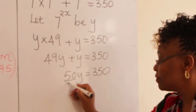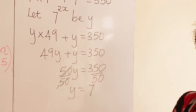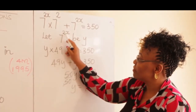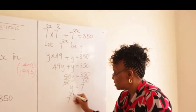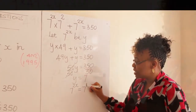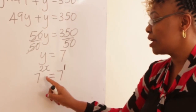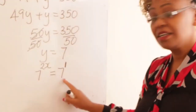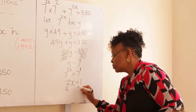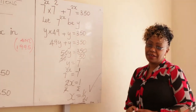Divide both sides by 50 to get y. Therefore y equals 7. But we don't want y — we want x. Your y was 7 raised to 2x, so 7 raised to 2x equals 7, which is 7 raised to 1. The bases are the same on both sides, so equate the powers: 2x equals 1. Dividing by 2, x equals one half.